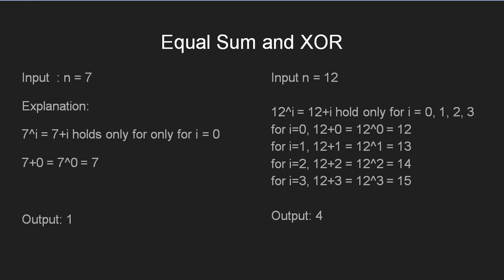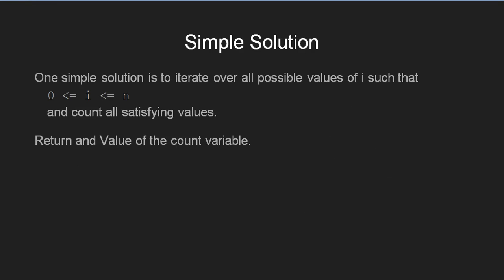Now the thought process for the solution of the given problem goes through two different steps. Let us first start with the naive solution to this problem. A simple solution one can suggest for this problem is to iterate from i equal to 0 to i equal to n and count the values which satisfy the property of equal sum and XOR.